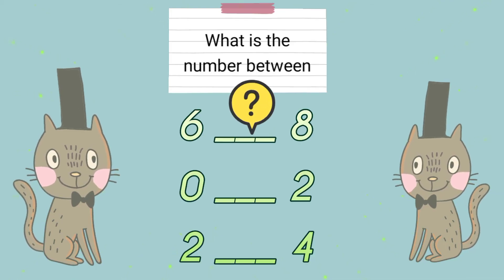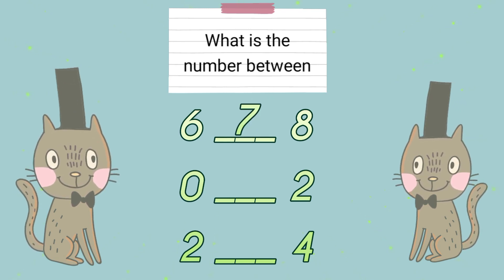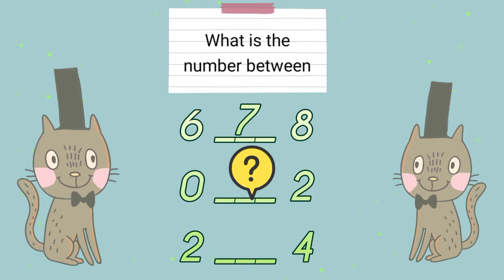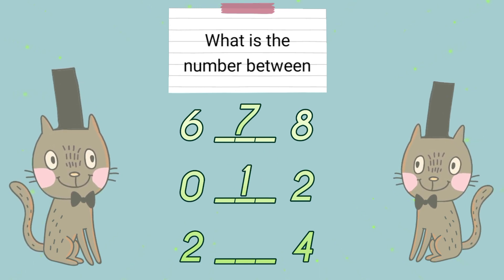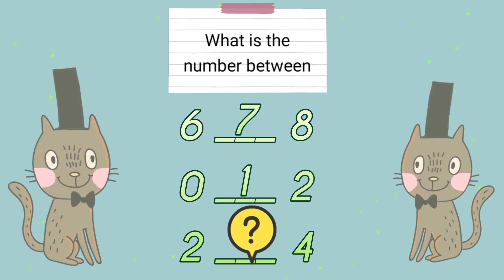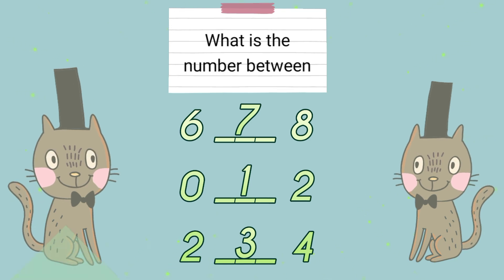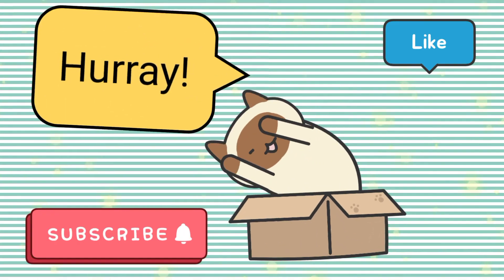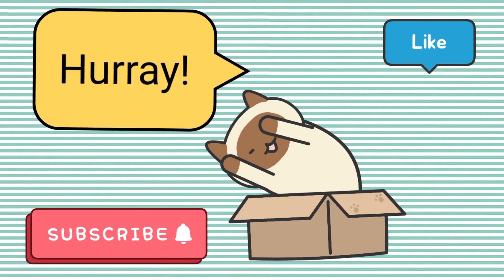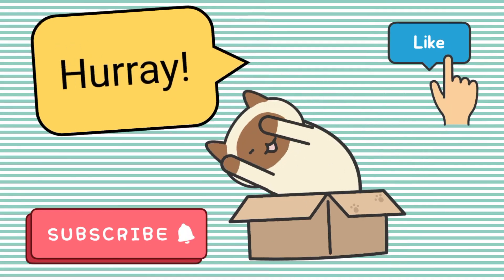What is the number between six and eight? Seven. Right. What is the number between zero and two? One. Yes. What is the number between two and four? Three. Right. Hurray for a job well done! Now it's time to do the drills in your book. Thank you for listening well.